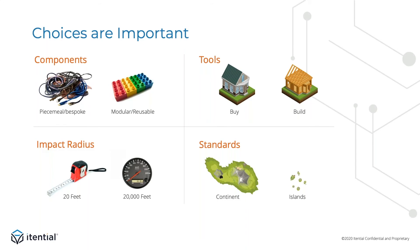This is where choices make all the difference. Folks who implement automation face a number of decisions when they design their solution. First, they need to make decisions about the components they're going to use — whether to build a loosely coupled collection of bespoke elements, or to focus on modular and reusable components. Second, will they create the components themselves or purchase them? They need to weigh the benefits of a custom-built solution against the associated costs for upkeep, time, and technical debt versus purchasing a pre-built solution.